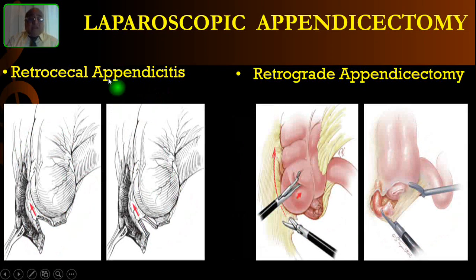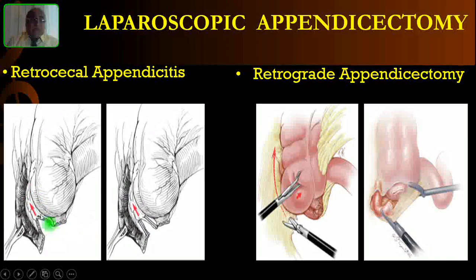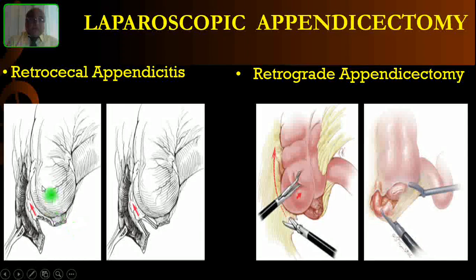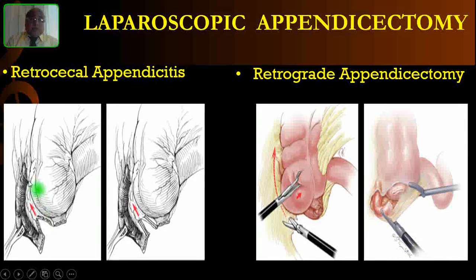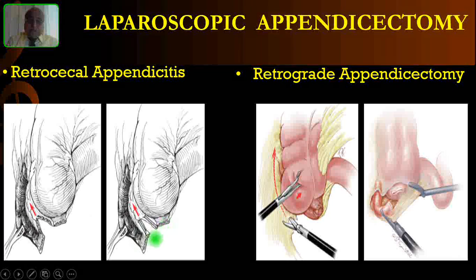If your patient has a retrocecal appendix or paracecal appendix, you can use clip and cut — apply multiple clips and cut — or use the same bipolar cautery to separate the appendix. For a paracecal appendix, first divide the appendix from the base, then slowly remove the meso-appendix bit by bit using bipolar electro-desiccation and cut, or clip and cut, until you reach the tip of the appendix.